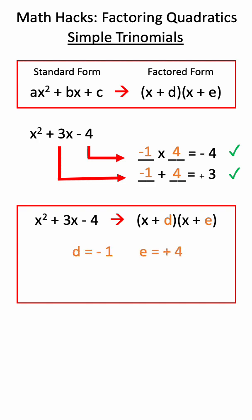To factor this, we simply use these two numbers we just determined to be our d term and our e term, and we can simply jump from standard form to factored form.